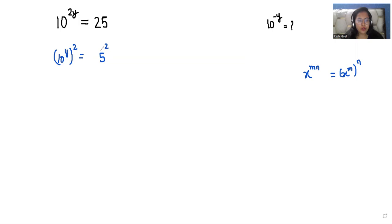Now both sides have squares so they cancel out. So what is left? 10 power y equals 5.